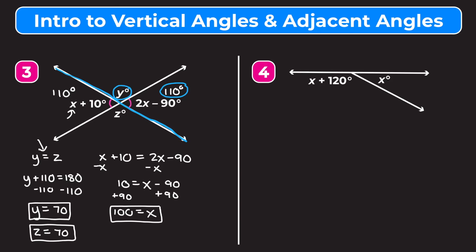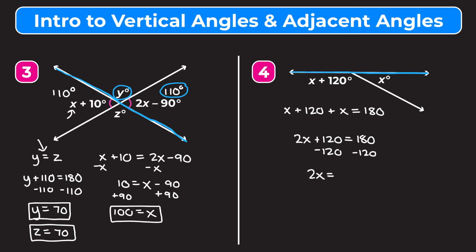Let's go through one more example — I encourage you to try example four on your own first. These two angles are adjacent and form a straight line, so they add up to 180 degrees. The equation is: (x plus 120) plus x equals 180. Combining like terms: 2x plus 120 equals 180. Subtracting 120 from both sides gives 2x equals 60. Dividing both sides by 2 gives x equals 30.